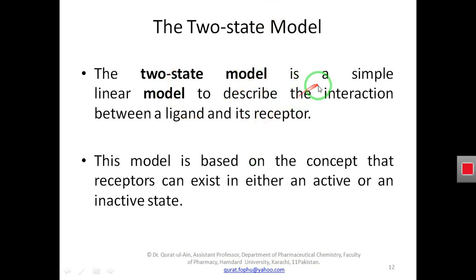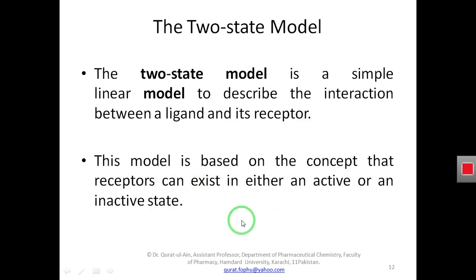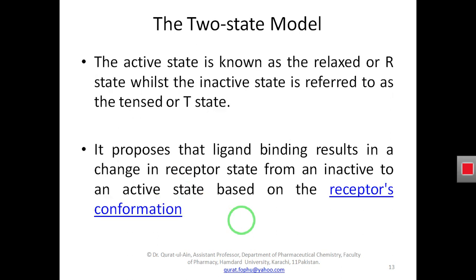The two-state model is based on the concept that a receptor can exist in either an active state or an inactive state. The active state is known as the relaxed or R state, while the inactive state is referred to as the T or tense state. This theory proposes that ligand binding results in a change in the receptor state from inactive to active. This change in receptor state from inactive to active will be based on the receptor conformation — if the conformational change can activate the receptor, the receptor will be activated; otherwise the receptor gets inactivated.